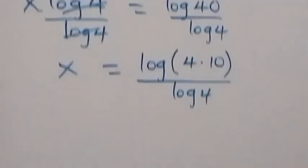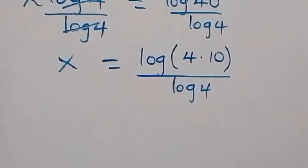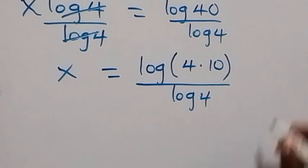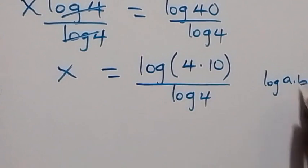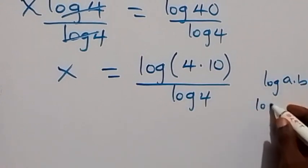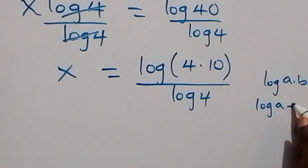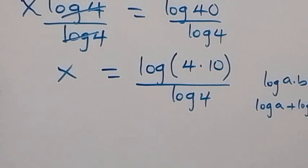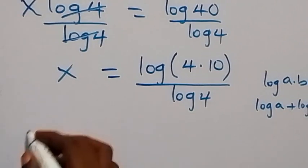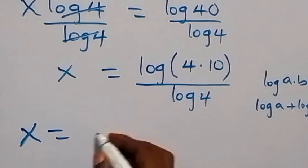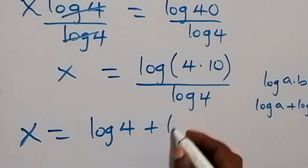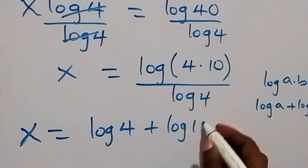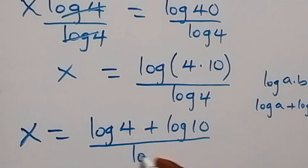From here we can rewrite this using the law of logarithms, where log of a times b is the same thing as log a plus log b. So when we use this, we have x equals to log 4 plus log 10, all divided by log 4.